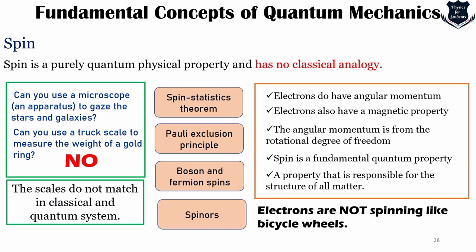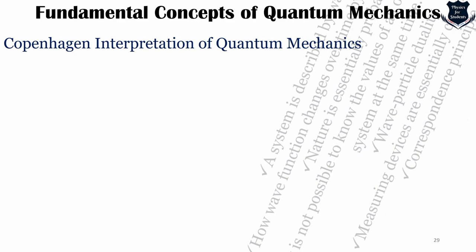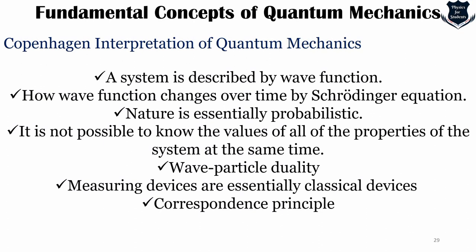The Copenhagen interpretation, principally by Niels Bohr and Werner Heisenberg, is the oldest and most commonly taught interpretation. Key points: a system is described by a wave function; the wave function evolves by the Schrödinger equation; nature is probabilistic; it is not possible to know all properties simultaneously; wave-particle duality applies; measuring devices are classical devices; and there is a correspondence principle.